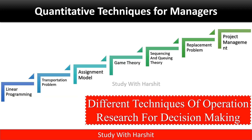Different techniques of Operation Research for decision making: linear programming, transportation problem, assignment model, game theory, sequencing and queuing theory, replacement problem, and project management. These are the different techniques of Operation Research for decision making.